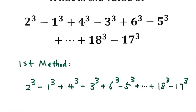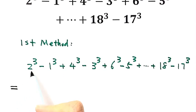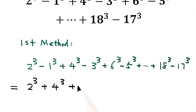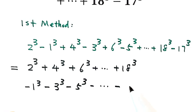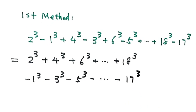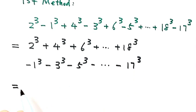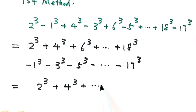We're going to separate the positive terms and the negative terms. The positive terms are the even-numbered cubes: 2 cubed, 4 cubed, 6 cubed, and so on up to 18 cubed. The negative terms are the odd-numbered cubes: 1 cubed, 3 cubed, 5 cubed, and so on up to 17 cubed.